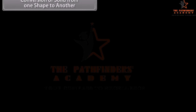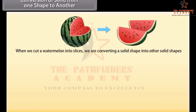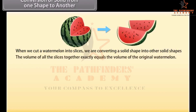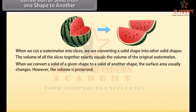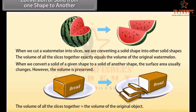When we cut a watermelon into slices, we are converting a solid shape into other solid shapes. Regardless of the size and shape of the slices, one fact holds true: the volume of all the slices together exactly equals the volume of the original watermelon. When we convert a solid of a given shape to a solid of another shape, the surface area usually changes; however, the volume is preserved. Similarly, when cutting bread into slices, the total volume of the slices equals the volume of the original object.